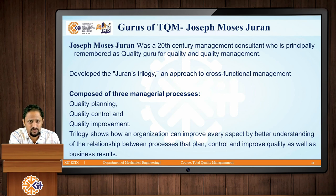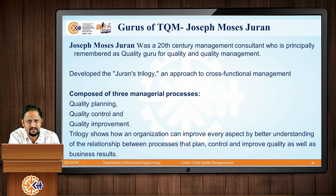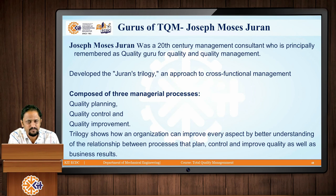The majority of companies across the world have used the philosophy of Joseph Juran, also known as Juran's trilogy. This trilogy is composed of three managerial processes: quality planning, quality control, and quality improvement. What this trilogy tries to show is how an organization can improve every aspect by better understanding these three concepts, so that the organization achieves better business results.